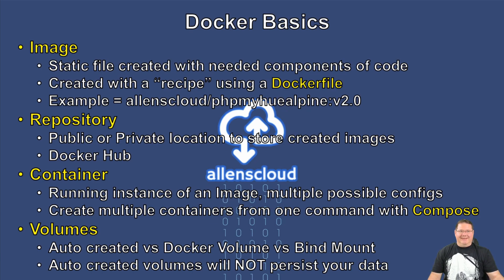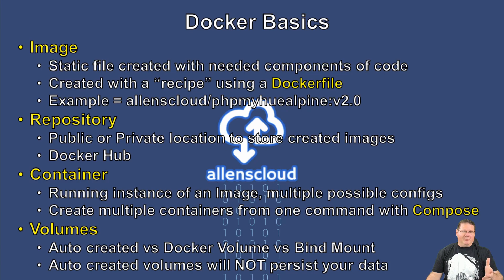An image itself is a static file that's created with all of the different components and code needed to run the application you're trying to run. They create those usually with a Dockerfile. The Dockerfile is just a text file — I call it the recipe. It basically has instructions on what code you're going to be running, and then they compile all of that together into the static image. I actually created my first image a couple of weeks ago, and I'll do a separate video on that.